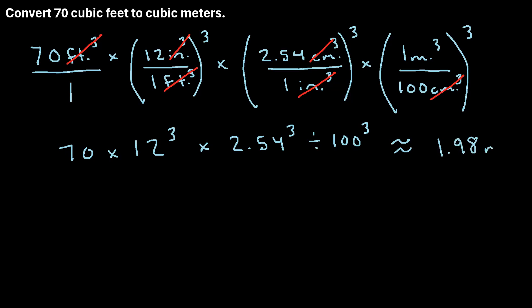And remember, our units will be meters cubed. So what that means is 70 cubic feet is equal to 1.98 cubic meters.